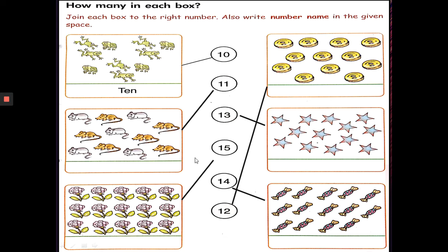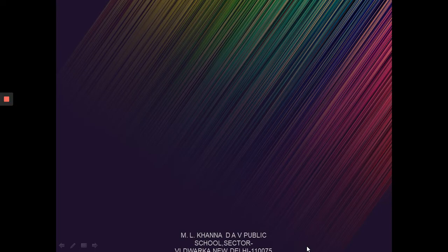Now let us write the number names. So 11 will be written as E-L-E-V-E-N. Then the number 15 will be F-I-F-T-E-E-N. 12 will be written as T-W-E-L-V-E. 13 is T-H-I-R-T-E-E-N. 14 is F-O-U-R-T-E-E-N.